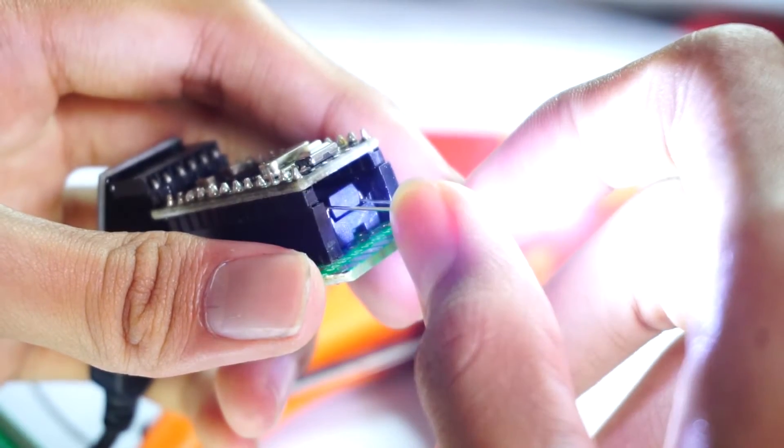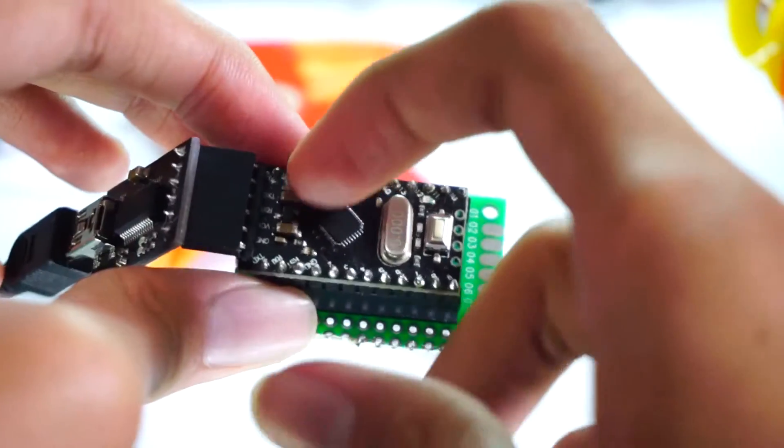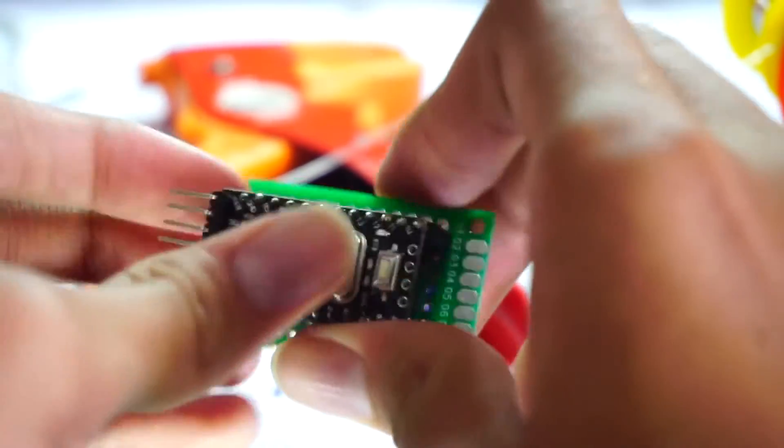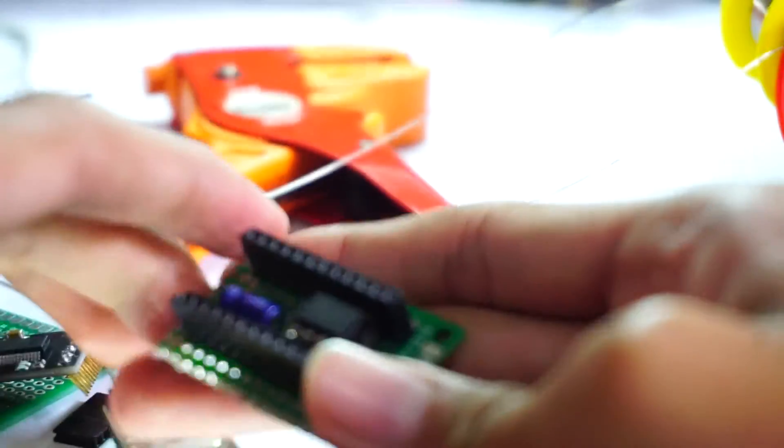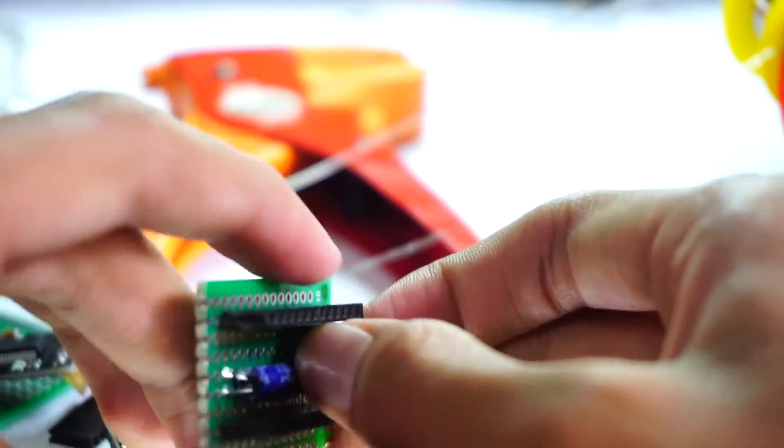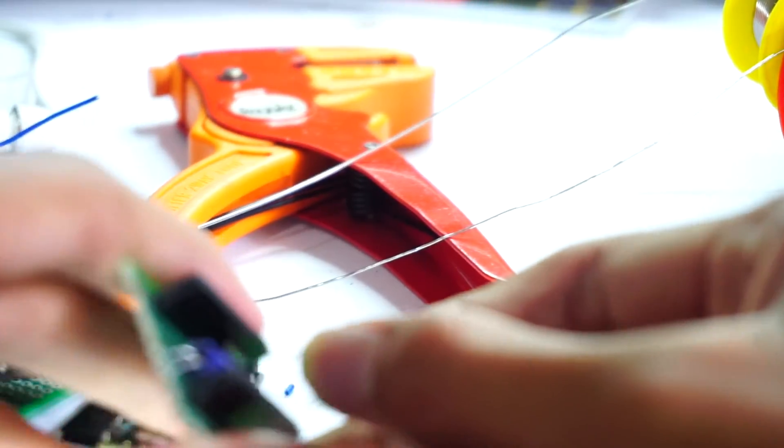So after programming, you can take the Arduino out from the shield, then there's this ATtiny, tiny ATtiny. Take it out and you're ready to go. You can place it on your projects or whatever you want them to be.